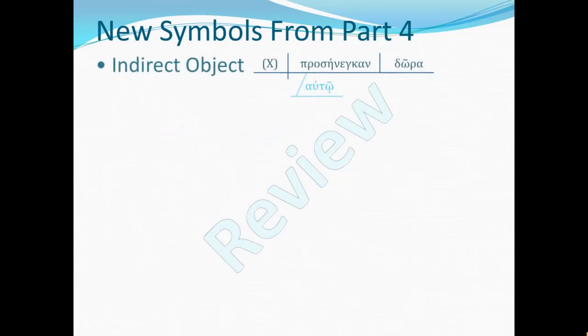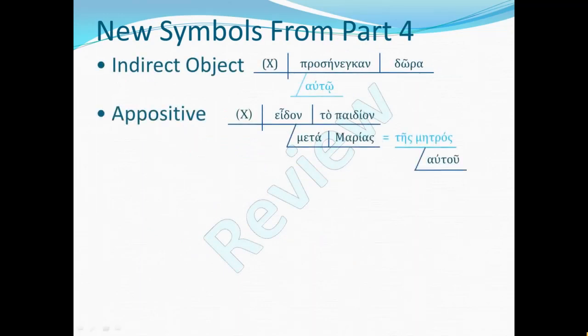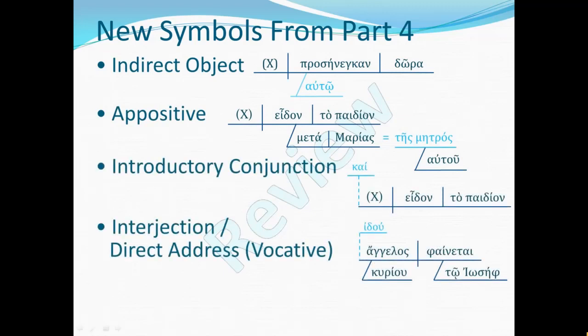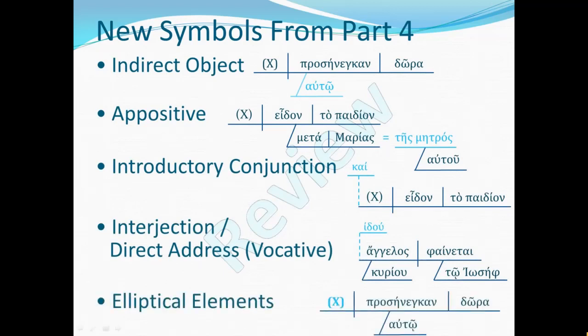We learned some new symbols in part four of our video series: the indirect object symbol and the appositive symbol, also the introductory conjunction and the interjection or direct address symbol. We also learned that elliptical elements are shown with a capital X in parentheses, or alternately with a Greek or English word in parentheses.